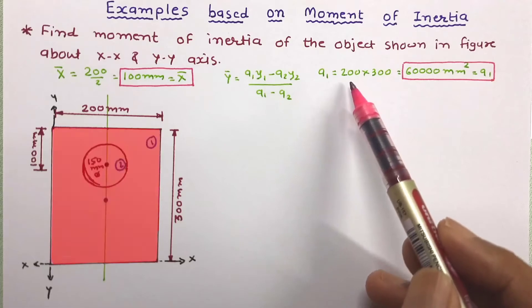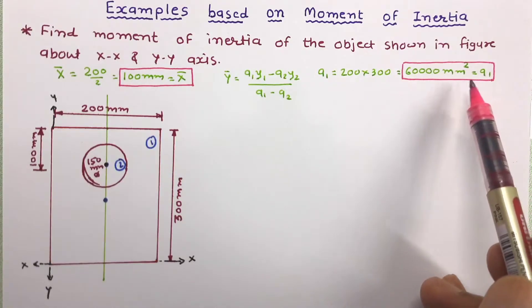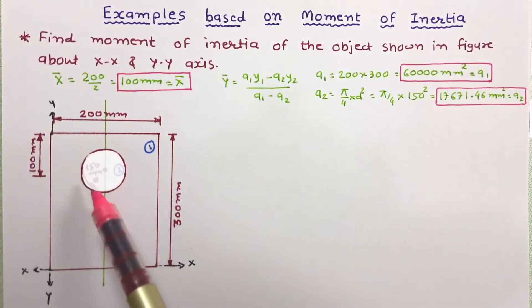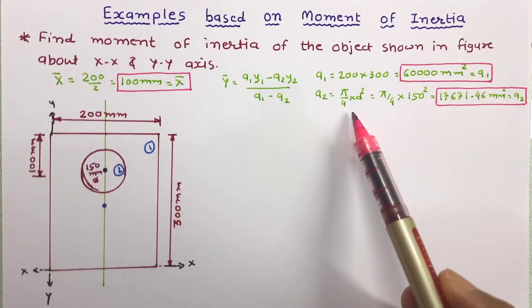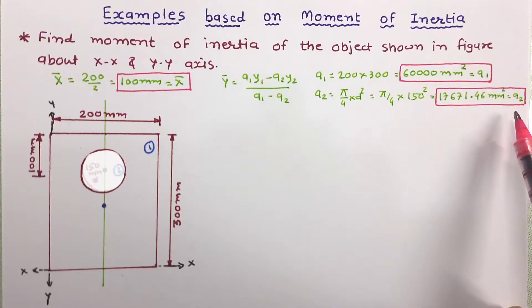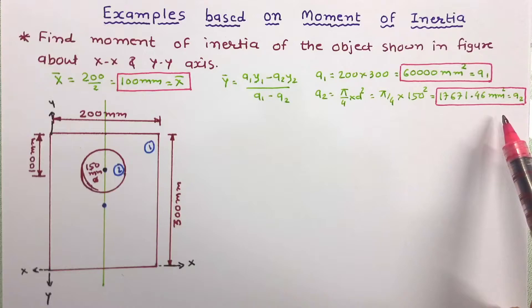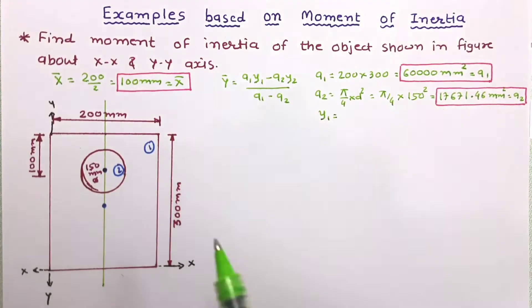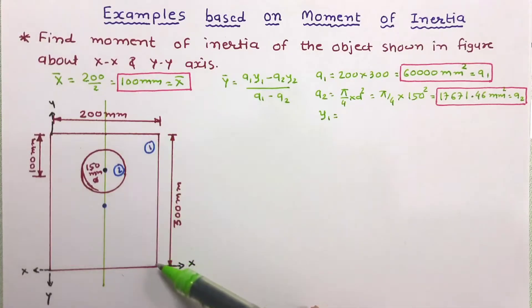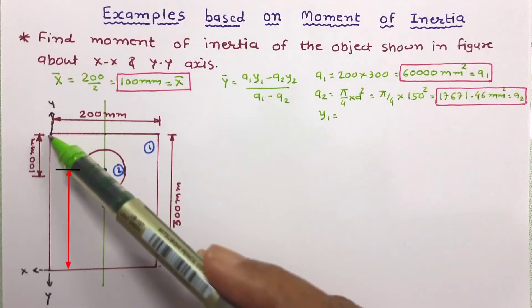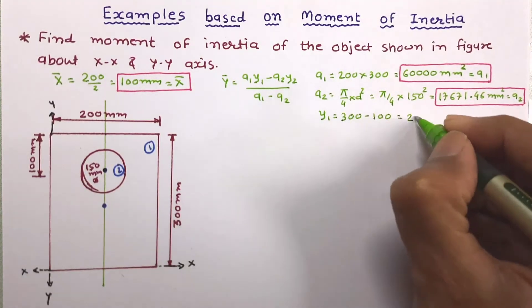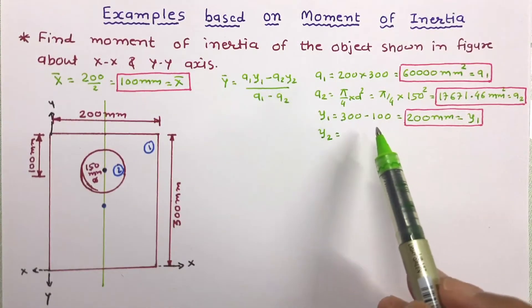The first figure is a rectangle. Its area is length into width, so a1 is 60,000 mm². The second figure is a circle. The area of a circle is pi by 4 times d squared. With the given value of d, a2 works out to 17,671.46 mm². Now for y1 — the distance of the centroid of the rectangle from the xx axis — the total height is 300 and the centroid is 100 from the top, so y1 is 300 minus 100 equals 200 mm.